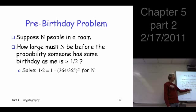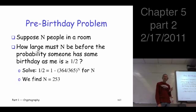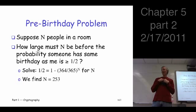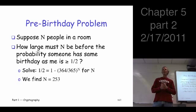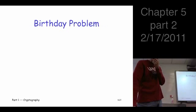The probability at least one does share my birthday is one minus that. Setting that equal to one half and solving for n, we find n is 253. Does that seem right intuitively? You need about 365 people before you expect to find one with the same birthday, and 253 is about that order of magnitude.